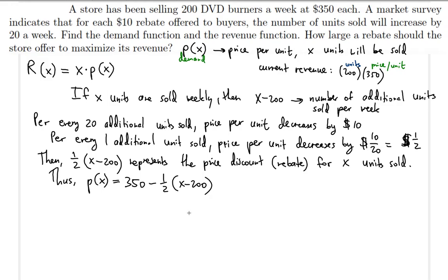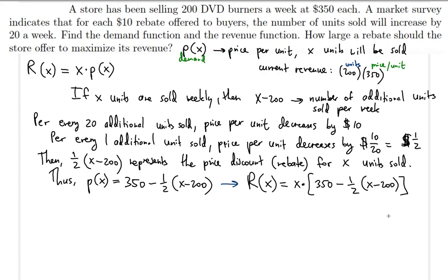Now that we have the demand function, let's build the revenue function. R of X equals X times P of X, so substituting, R of X equals X times [350 minus one half times (X minus 200)]. Expanding, this becomes 350X minus one half X squared plus 100X.